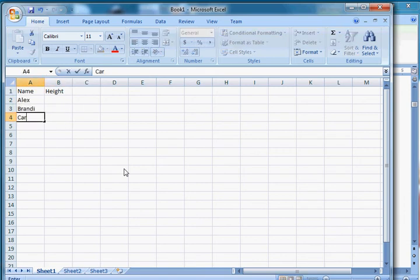And their names are Alex, Brandy, Carla, Devin, and Aaron. And they each have heights in inches: 66, 64, 73, 60, and 57. So that's their name, that's their height.